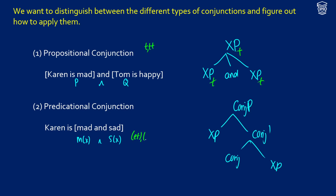For predicational conjunction, the type is going to be ET, ET, ET — because we're taking an ET and an ET and pumping out an ET. So our conjunctions are going to take the form of essentially X, X, X.